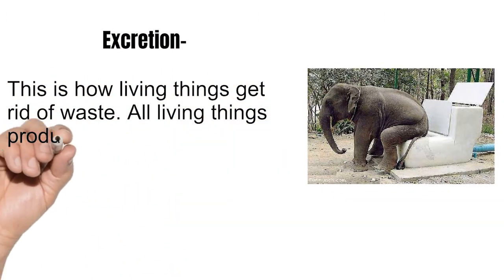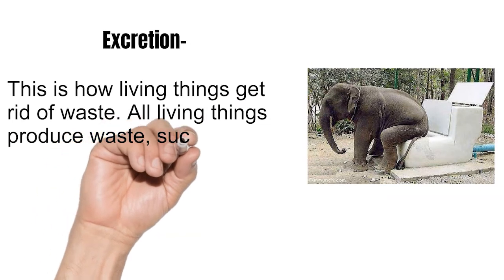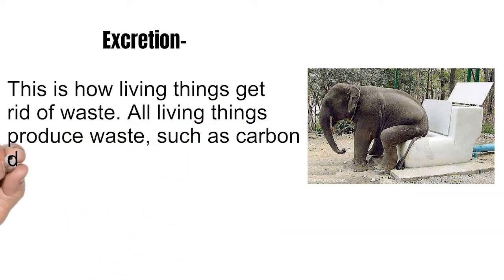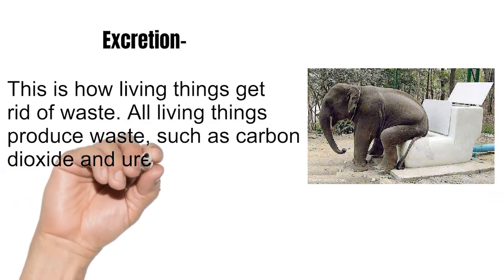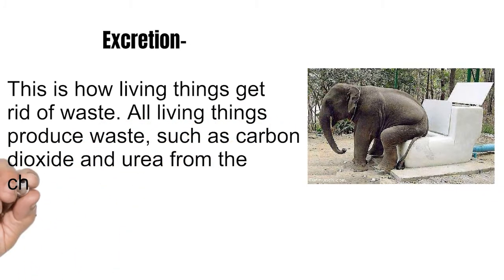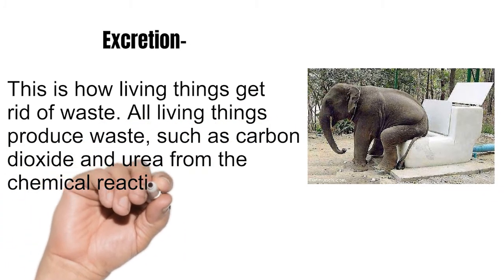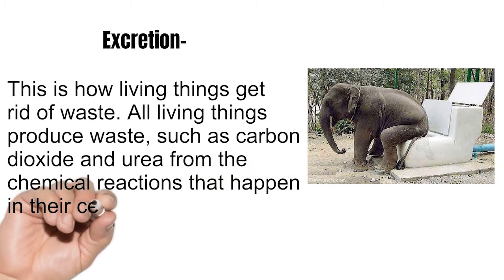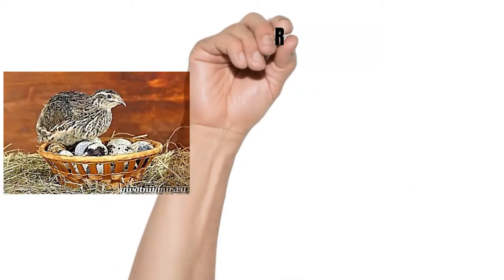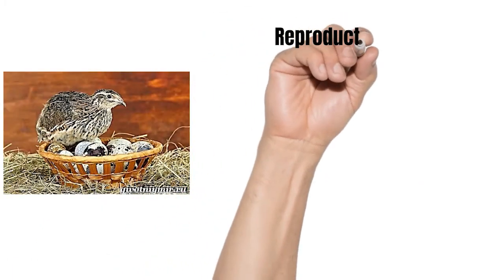Excretion: this is how living things get rid of waste. All living things produce waste such as carbon dioxide and urea from the chemical reactions that happen in their cells.